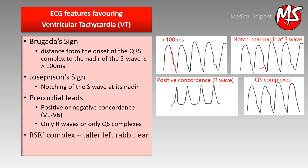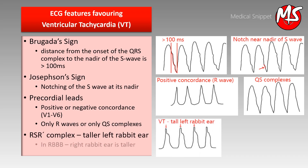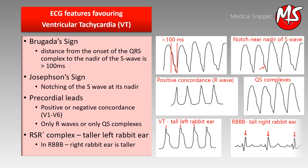The most specific sign for VT is a tall left rabbit ear in RSR complexes. In right bundle branch block, the right rabbit ear is tall.